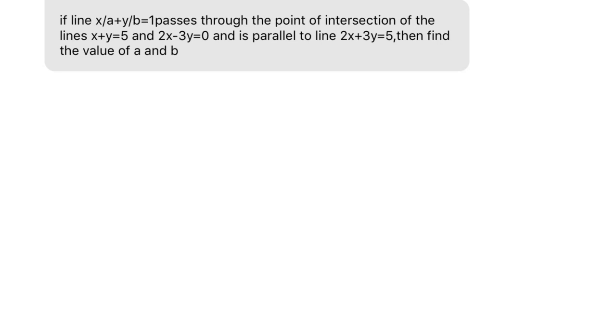So this question consists of two parts. First, what is given is x/a + y/b = 1 passes through the intersection of x + y = 5 and 2x - 3y = 0. The same equation x/a + y/b = 1 is parallel to 2x + 3y = 5. So we will use both conditions to solve this equation.